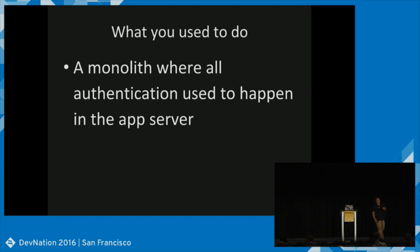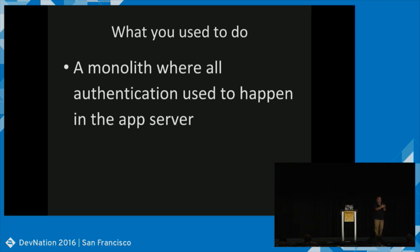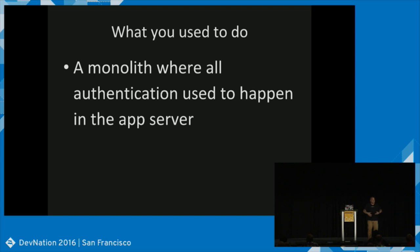Now we get to security. What we used to do — all you Java and Django people will recognize this — is authentication happened in the app server tier. Because everything was in that app server clustered together, you used your app server to do authentication. That's one of the reasons people love Django: it's got nice central authentication. But that won't work if every service is its own app server — you can't cluster them together, or if you're mixing Python and Java.